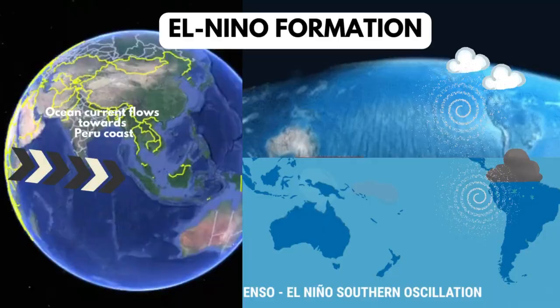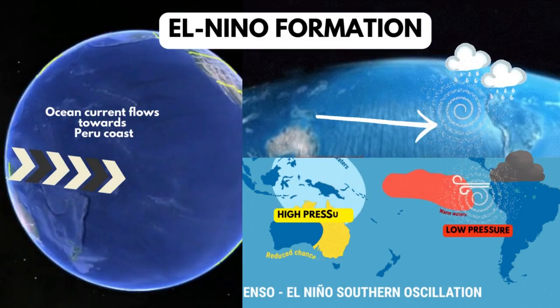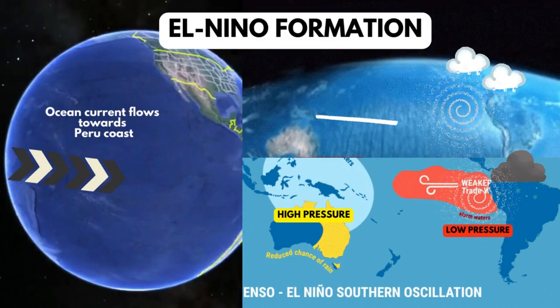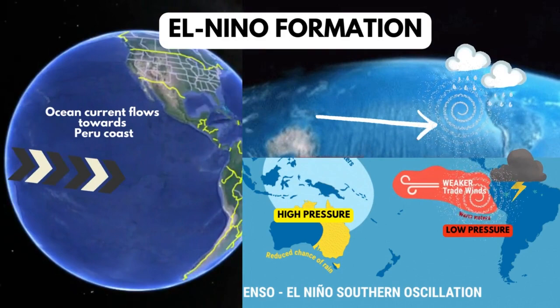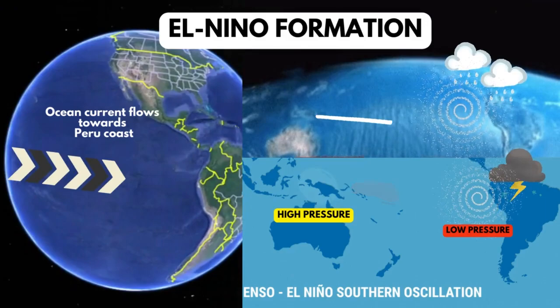Now we will discuss El Niño formation. During El Niño, warm ocean water in the central and eastern tropical Pacific Ocean expands towards the Americas. This warming of sea surface temperatures has significant impacts on global weather patterns.